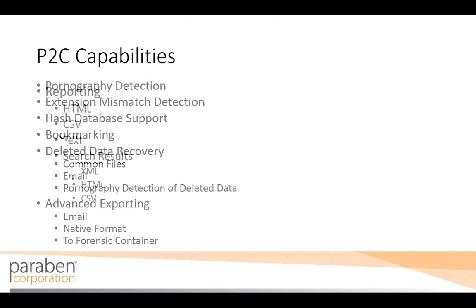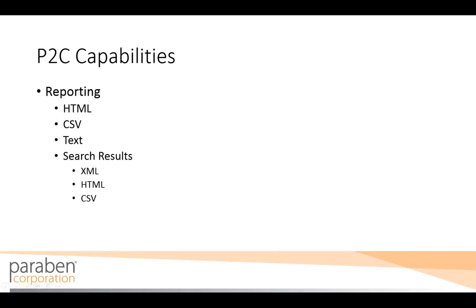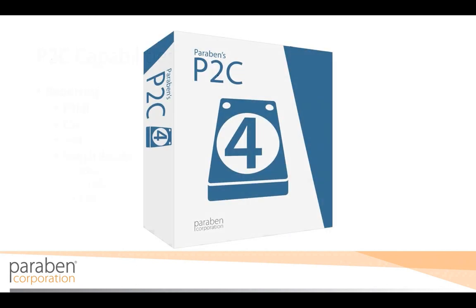The last feature we'll cover is reporting. P2C has many different types of reports you can create in many popular formats. This includes HTML, CSV (comma delimited), and text. You can also create quick reports in XML, HTML, or CSV format of your search results. This concludes the first section of your P2C introduction video training.